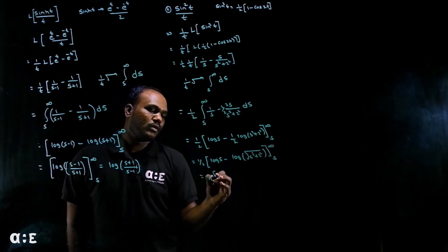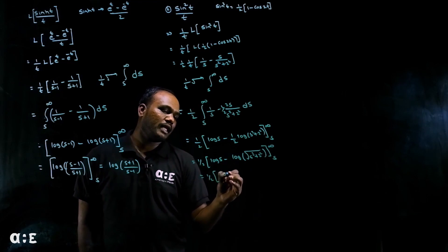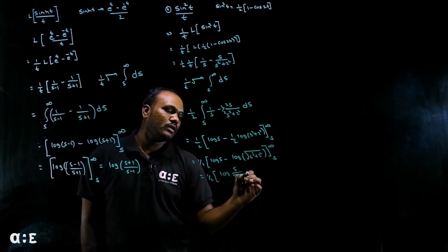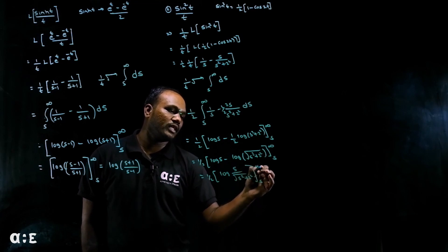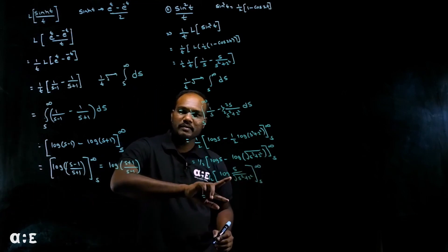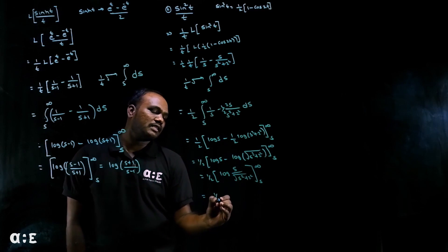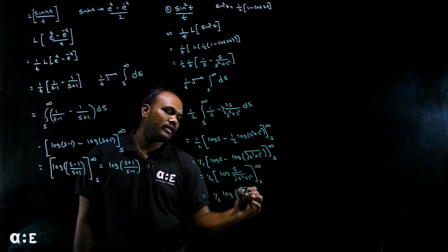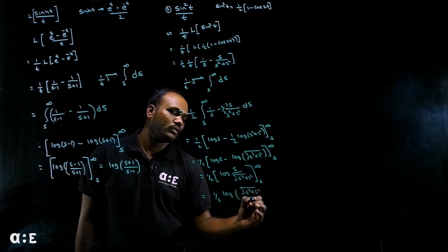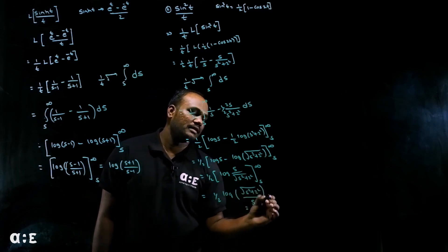Next, log a minus log b is log a by b. So I'll get s upon root of s square plus 2 square from s to infinity. Finally, after substituting the limits, just reverse and write the direct answer: log of root of s square plus 2 square over s. This is the final answer.